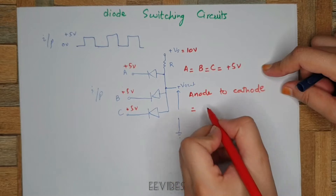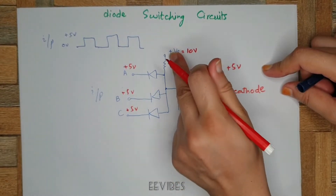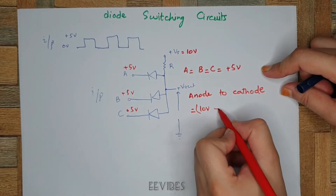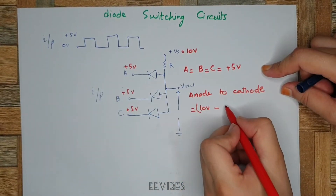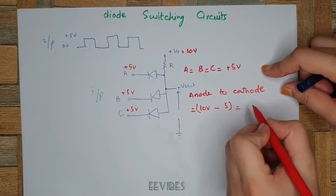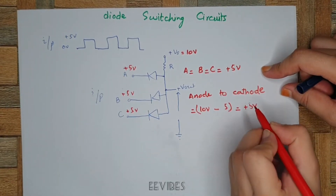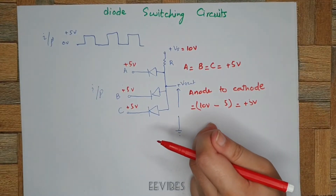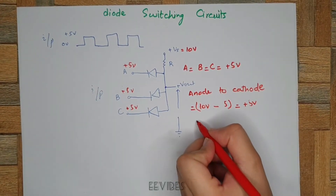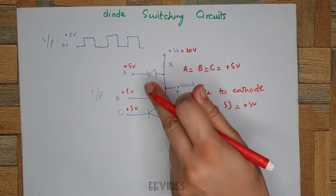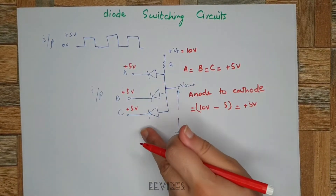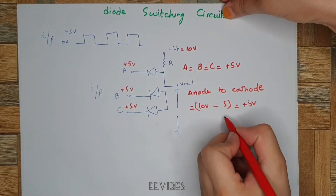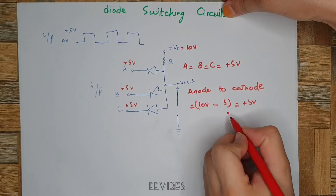This is calculated as the potential at the node point, which is approximately 10 volts, minus the potential at the cathode point, which is plus 5 volts, resulting in plus 5 volts across each diode connected in parallel. That's why we can say all these diodes will conduct at the same point, since equal potential exists across their terminals — across the anode and the cathode point.